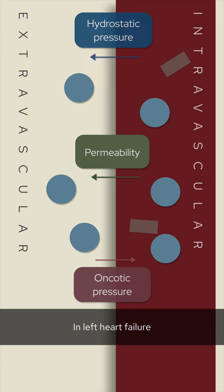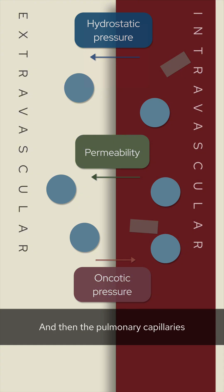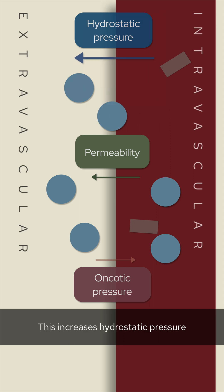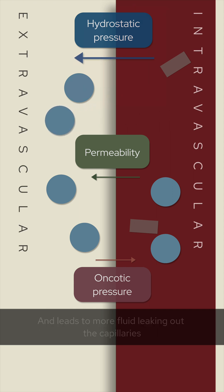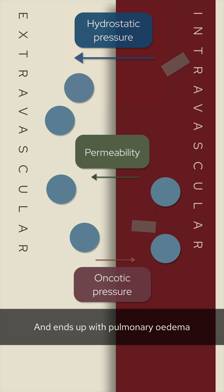In left heart failure, blood backs up in the left atrium, then the pulmonary veins, and then the pulmonary capillaries. This increases hydrostatic pressure and leads to more fluid leaking out of the capillaries, resulting in pulmonary edema.